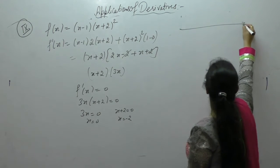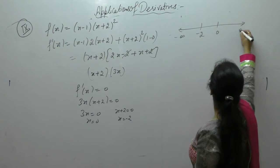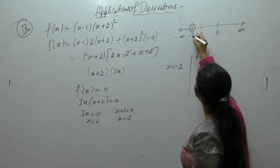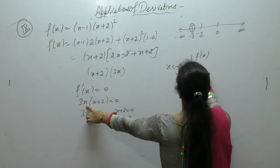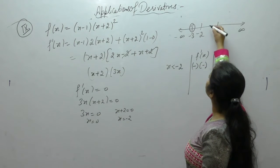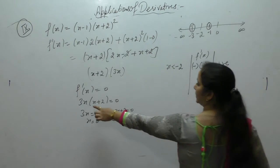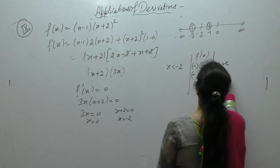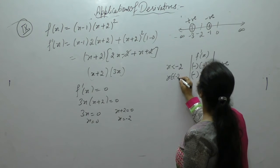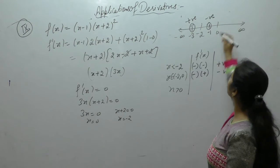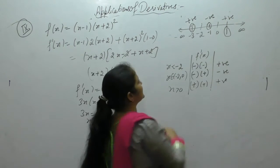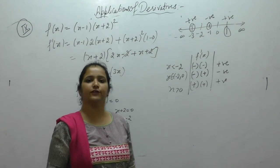Now we have two critical points: x = -2 and x = 0. We check the sign of f'(x). When x < -2, take x = -3: 3(-3)(-3+2) = 3(-3)(-1) = positive. When x is between -2 and 0, take x = -1: 3(-1)(-1+2) = negative.